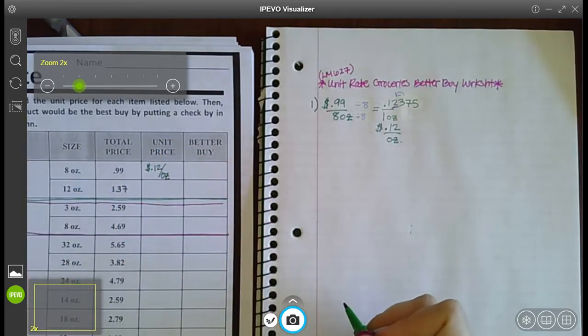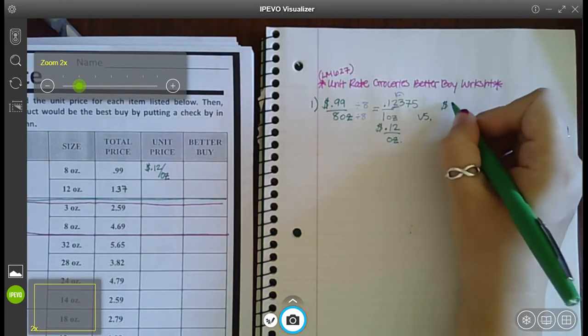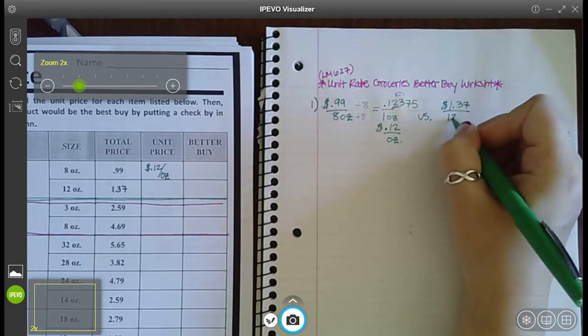Now I want to compare that, so versus the other one that says it was a dollar 37 for 12 ounces.